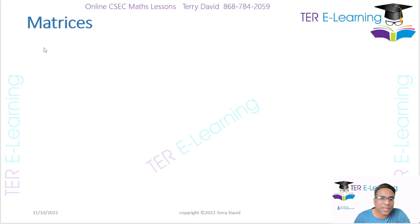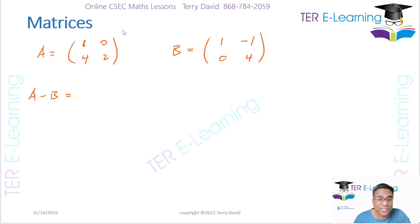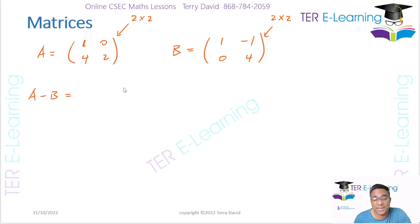So for example, if I have a matrix A given by 1, 0, 4, 2, and let's say B is given by 1, minus 1, 0, 4, and I want to find A minus B. The first thing we need to do is check the order. This matrix has two rows and two columns, so it's a 2x2 matrix. Both matrices are 2x2, so therefore I can subtract these matrices.